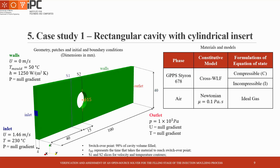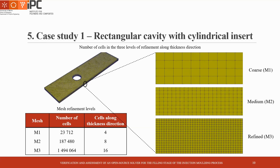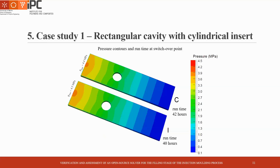The switchover point was defined as 98% of the cavity volume filled. A mesh refinement study was employed to understand if the results obtained with coarse, medium, and refined meshes were similar. The total number of cells in each direction was doubled for each level of refinement, meaning the total number of cells increased by 8 times for each level. Since the conclusions obtained with coarse, medium, and refined levels were similar, the results presented are those considering the most refined mesh, M3, which means the most accurate results.